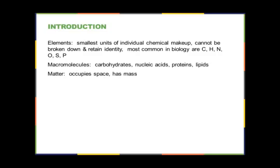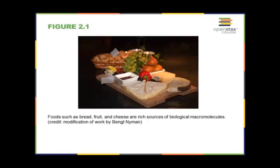Our macromolecules are going to include carbohydrates, nucleic acids, proteins, and lipids — sometimes referred to as the macromolecules of life. These are the four big chemical groups found in any living matter, which is anything that occupies space and has mass. You can see pictures of food like fruit, cheese, and bread — these are sources of several biological macromolecules. We need to take in those building blocks through food if our bodies or cells are going to grow bigger.